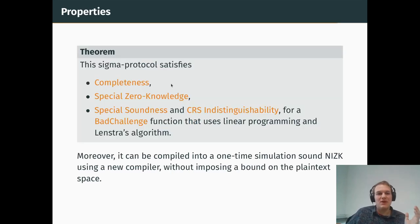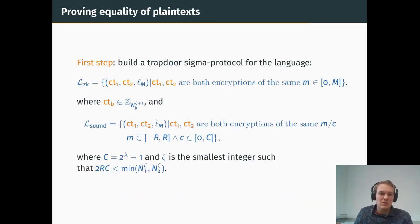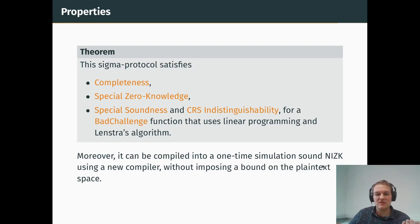So once again, we have the completeness, special zero-knowledge, special soundness, and CRS indistinguishability properties, and once more, the BadChallenge function. So it uses as trapdoor the factorization of N_1 and N_2, and it still needs to use linear programming and Lenstra's algorithm in order to find the bad challenge. Also, for what we want to use it in, we are actually giving a new way to turn this previous protocol into a one-time simulation sound non-interactive zero-knowledge proof system, because this new compiler lets us do so without imposing a bound on the plaintext space, which is exactly what we want, because we would like to be as close as possible to the Damgård-Jurik encryption scheme.